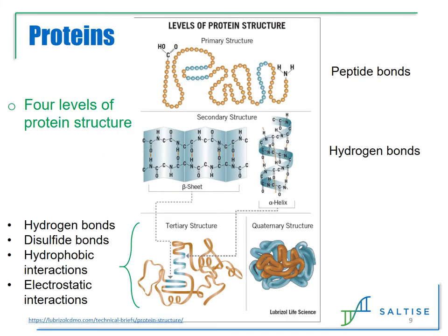There are four levels of protein structure. The first level is based on several amino acids linked together through the formation of peptide bonds. The second level involves hydrogen bonding between amino acids at different points in the peptide chain. The two main types of secondary structure are the alpha helix, which resembles a coil, and the beta sheets, which look like pleated sheets. The hydrogen bonding is indicated by the dashed orange lines.